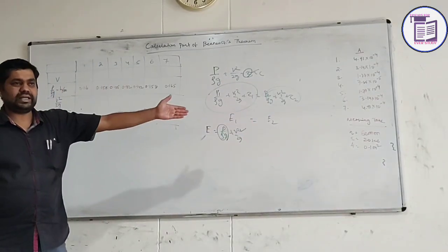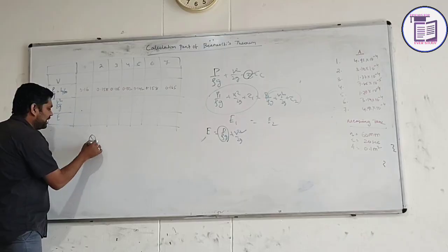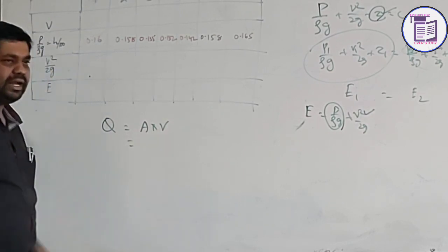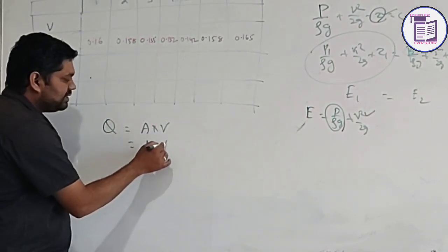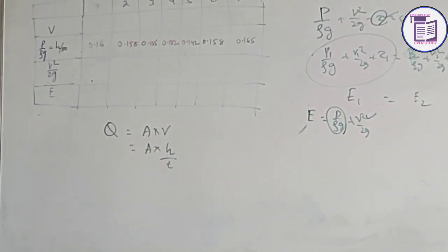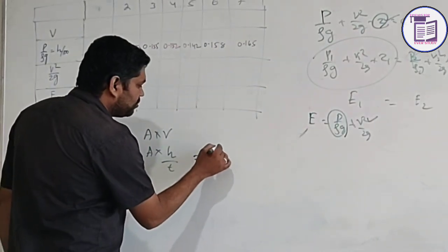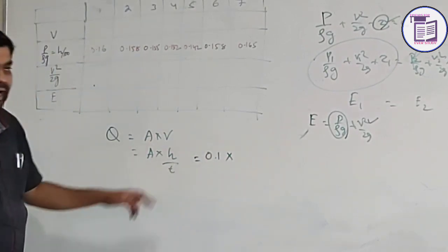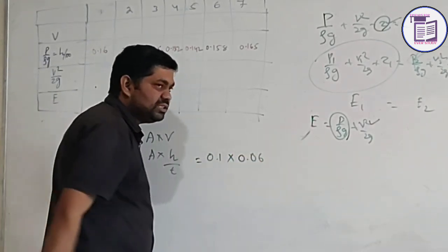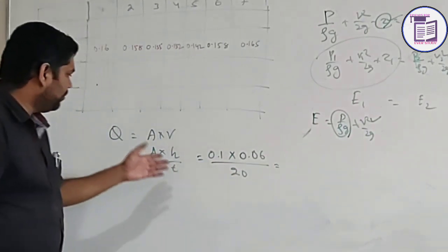The given value is your measuring time. You can find the discharge from the experimental data. Q is your discharge. Q is equal to area into velocity, where velocity is height by time. Area is already given as 0.1 meter squared. So the area is 0.1 meter squared, H is given as 60 mm, converted into meters that is 0.06 meter, divided by time which is 20 seconds. Using this relation we can find the discharge.